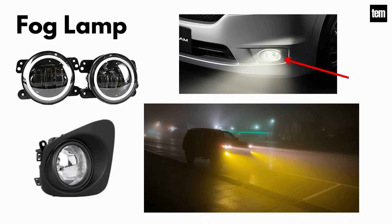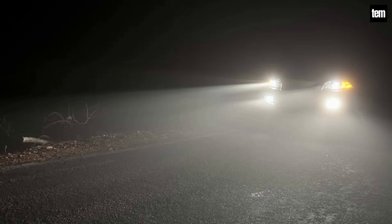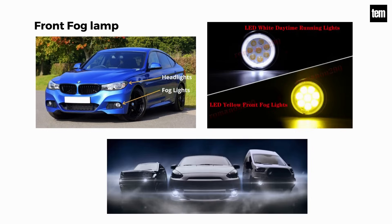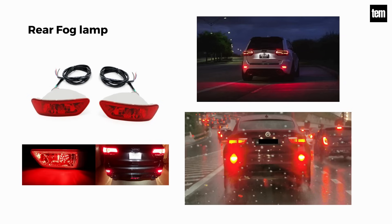Fog lamp. Foglights are designed to enhance visibility when bad weather conditions like rainy and foggy conditions reduce a driver's ability to see the road ahead. Foglights should be used when driver visibility is less than 100 meters. Front foglights can cut through mist, fog, rain, or dust as they are mounted lower than headlights. Rear foglights use bright red light bulbs to alert other road users of your presence.